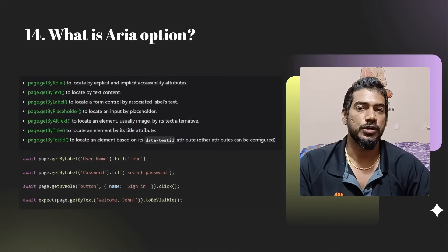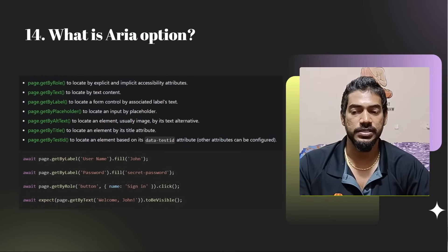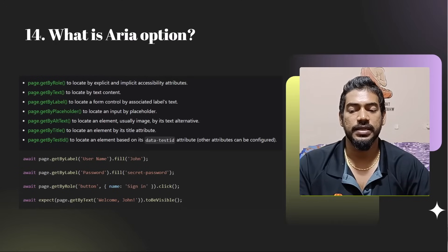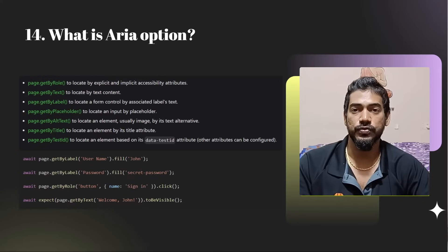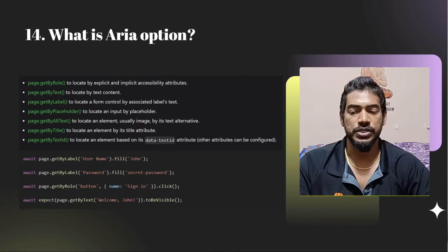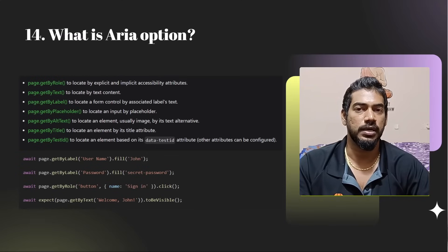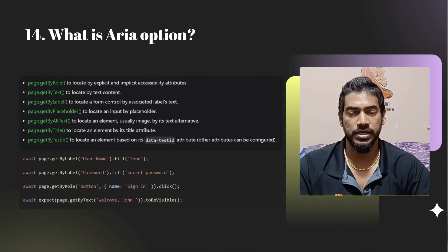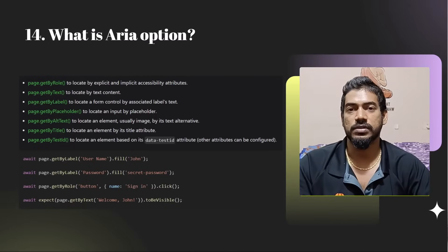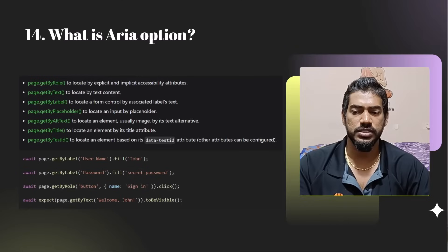What is the ARIA option? It was introduced a few releases ago. Basically we can interact with elements without finding them by traditional locators — just by seeing the UI. For example, if it's a dropdown, it will have a role called 'select'. You can say getByRole('select') and then provide the name, and it will find the locator.